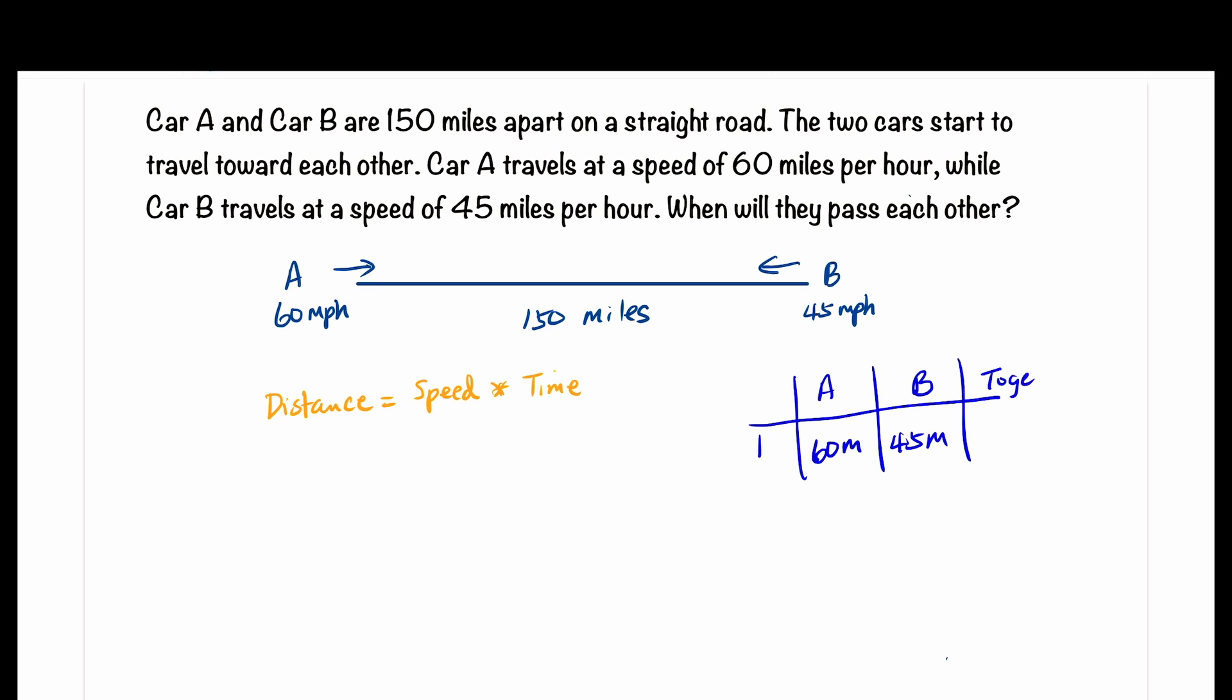In one hour, the two cars travel a combined distance of 105 miles. If you travel 105 miles in one hour, you are going 105 miles per hour.